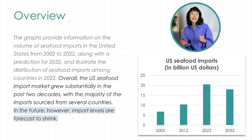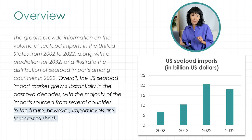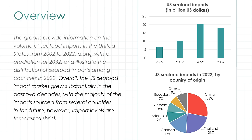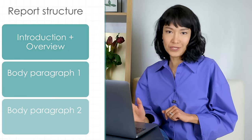Instead of simply saying 'imports,' I used 'import levels' to add variety to the vocabulary. Have a look at the overview as a whole — I've summarized all the information on both charts, and that's important. If you're wondering why it says 'import levels are forecast' and not 'are forecasted,' both are possible because this verb can be used as regular or irregular: 'to be forecast' or 'to be forecasted.' Let's move on to the body paragraphs.